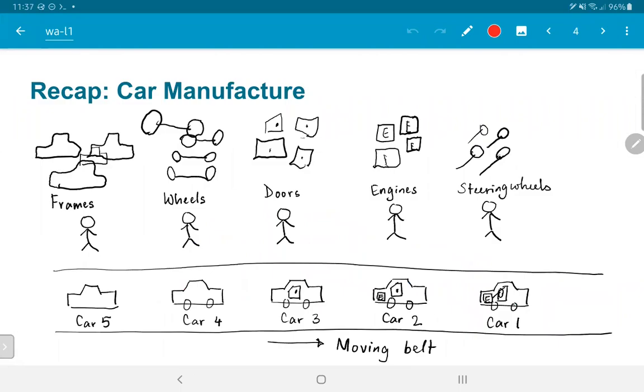The alternative that we envisioned for this was a moving belt and technicians placed at specific locations along the belt, with each technician having a very specific job. The first would take the frames and assemble them, the second would add the wheels, the third would add the doors, then the engines, and finally the last technician would add the steering wheels to create a fully constructed car. This was what we said was the assembly line or the pipeline mode of manufacture. And the moving belt is essentially the assembly line that allows us to construct things in a streamlined fashion.